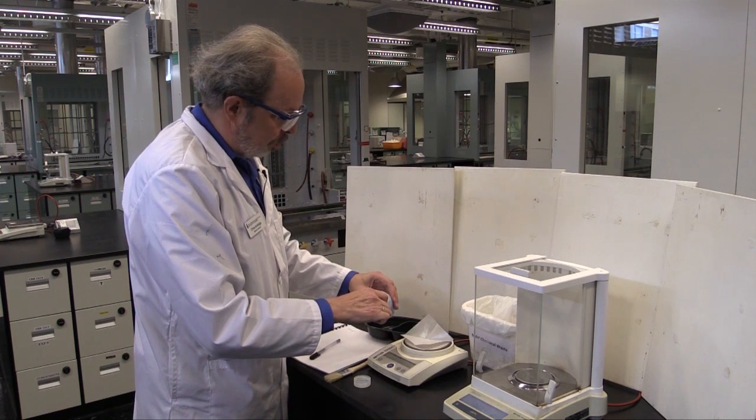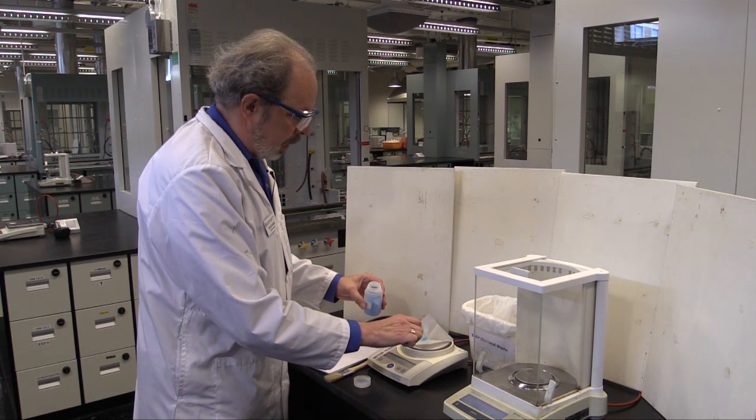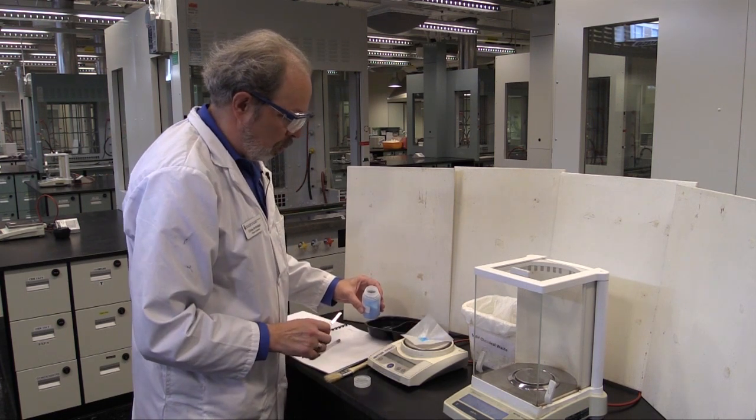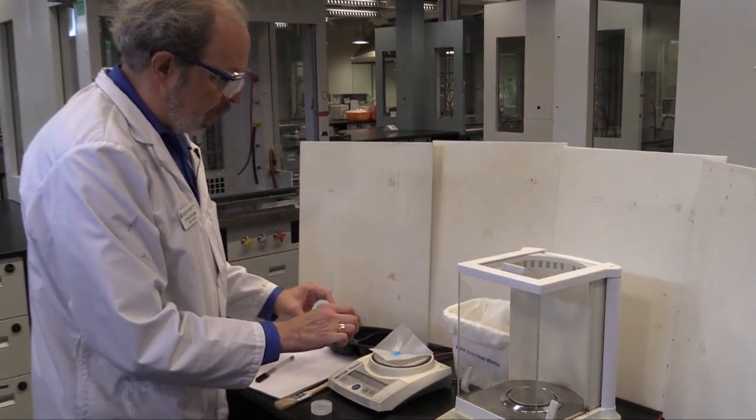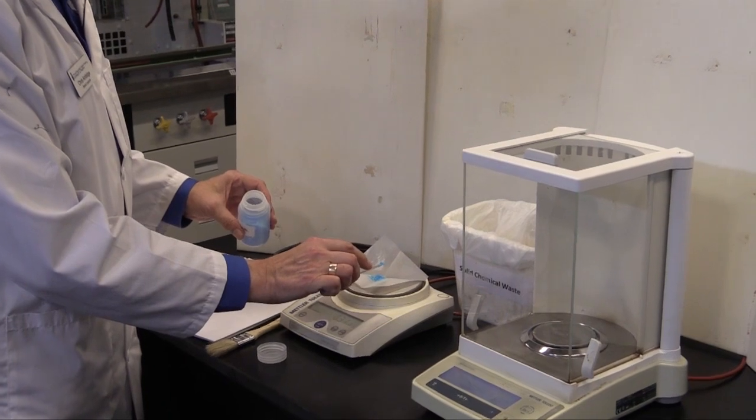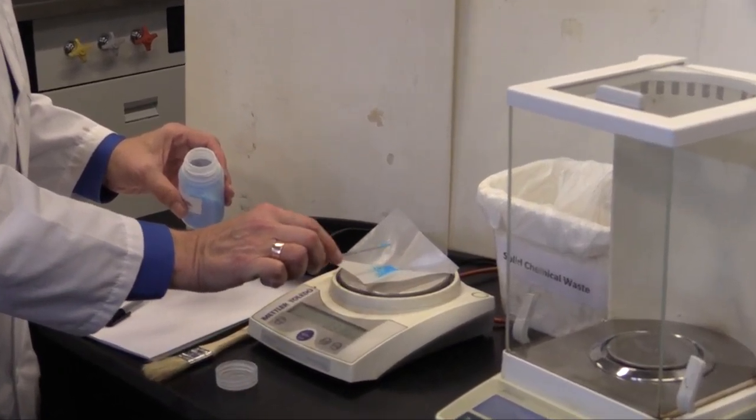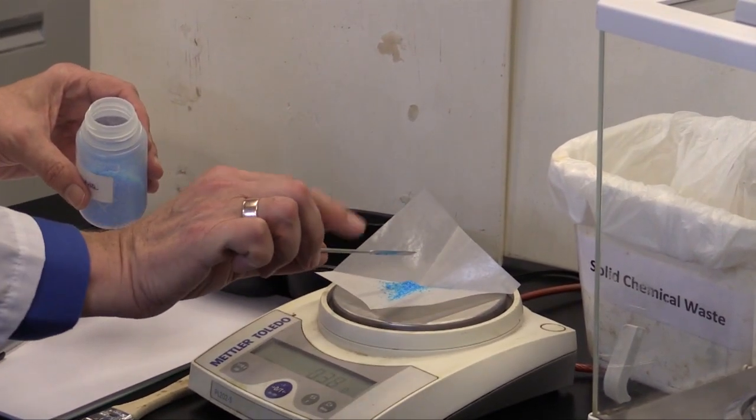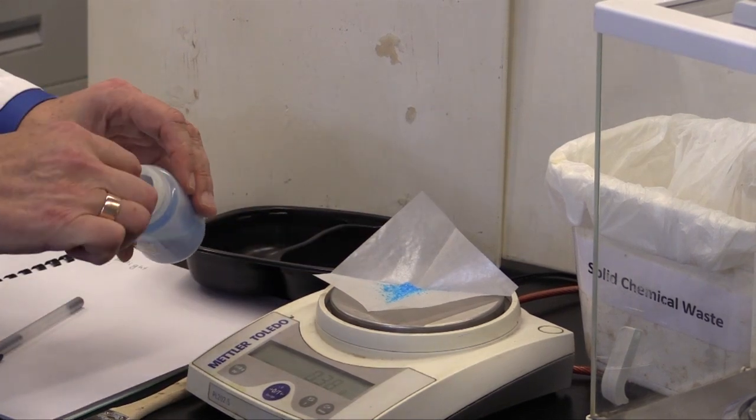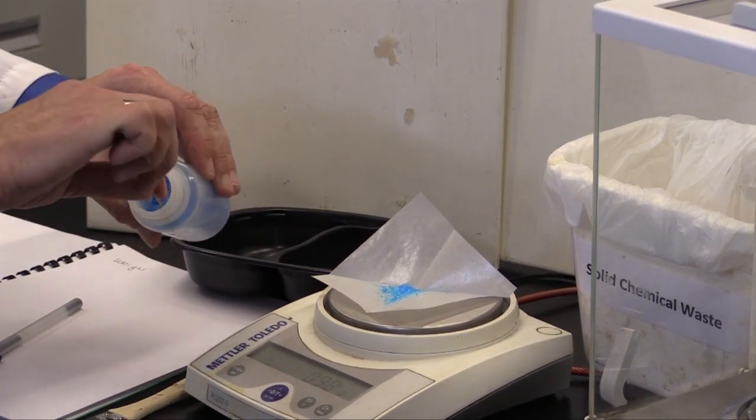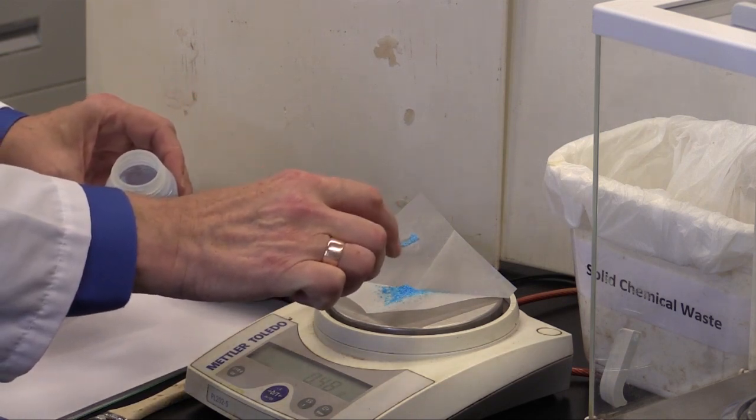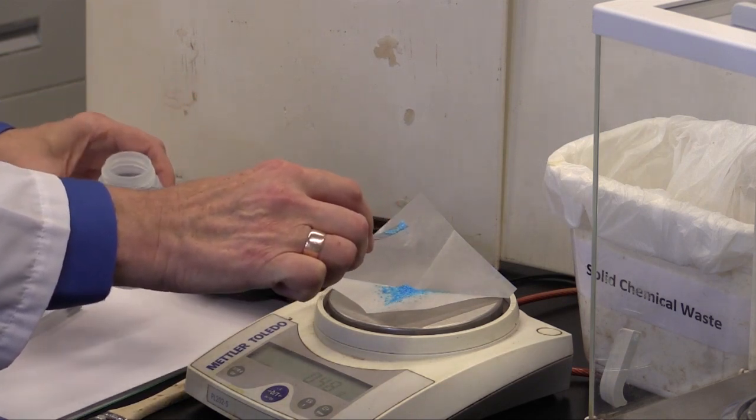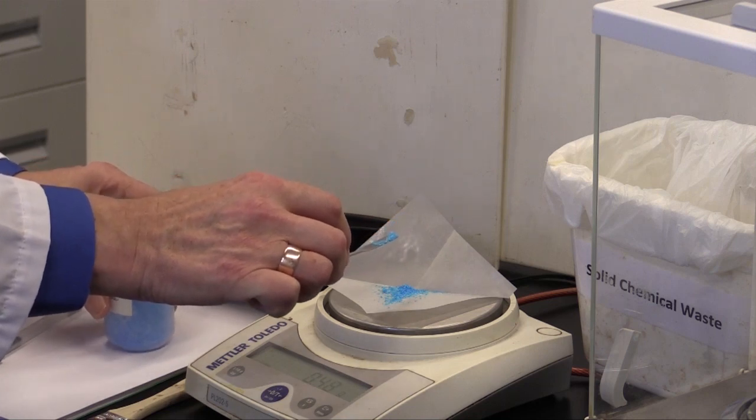Take a small amount on my spatula and place it on the weighing paper. It's 0.31 of a gram. Let's try some more. To get stuff off, if you tap the side of the spatula, you can knock stuff off. That's only 0.38, so let's add a bit more. That's at 0.49, which is as close as I'm going to get.